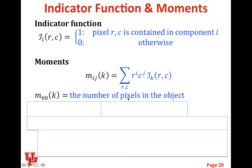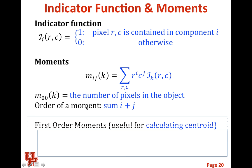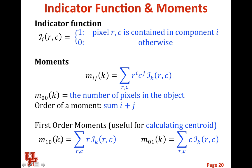When we talk about moments, we often talk about the order of the moment. The concept is easy: it's just the summation of i plus j. So the zeroth order moment tells us the number of pixels. Other very useful ones are the first-order moments — setting either i or j to one and the other to zero. M-one-zero gives you the average row value in your component. M-zero-one gives you the average column component. Together, m-one-zero and m-zero-one tell you where the centroid — the center of mass — of your object is.